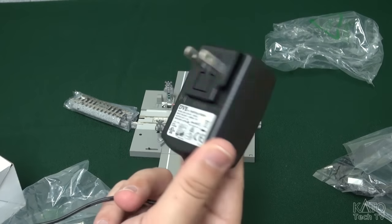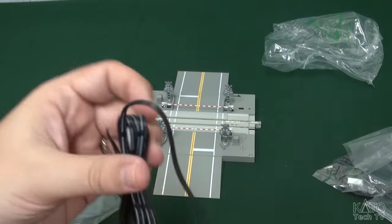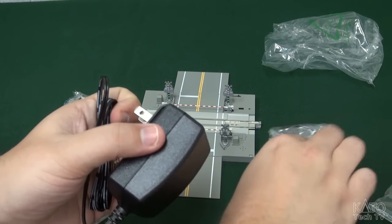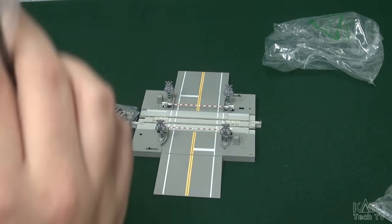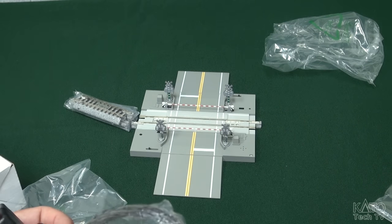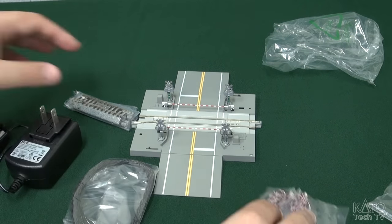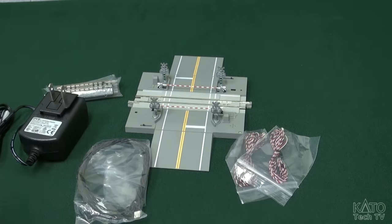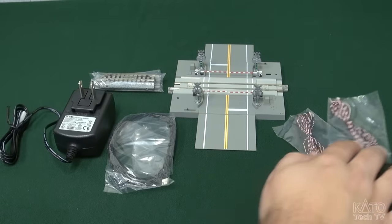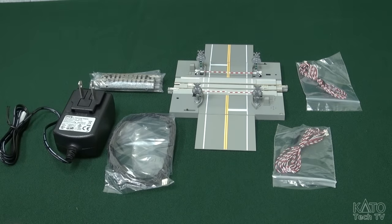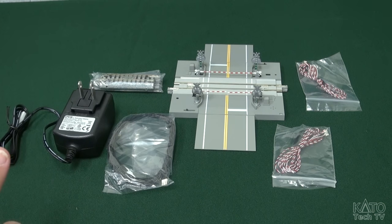There you go, ready to go, plug into the wall, this cable here, plug into that white box there, and then go into here. Again, I will show you all that in a moment. There we go, the contents of what you get inside the North American N-Scale automatic crossing gate. I know it's very exciting, just wait until you see it in motion.